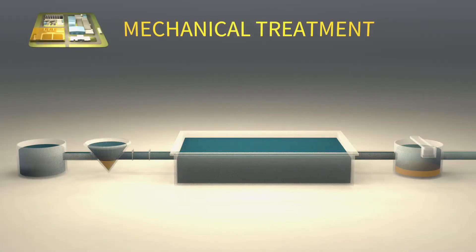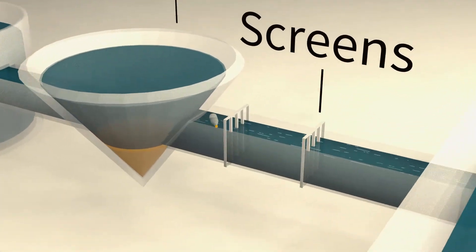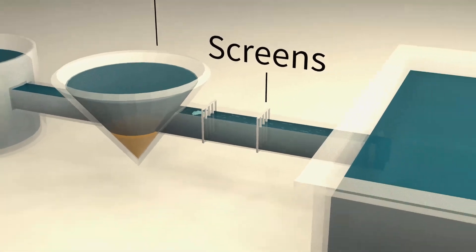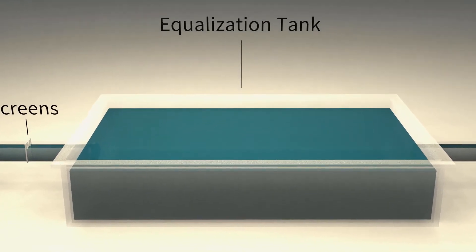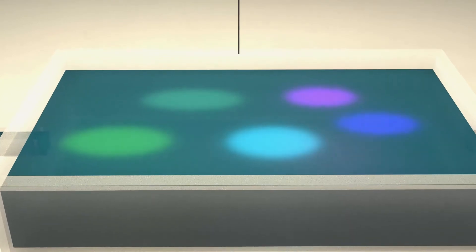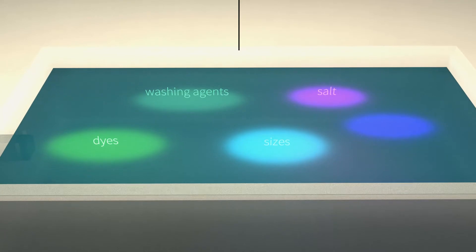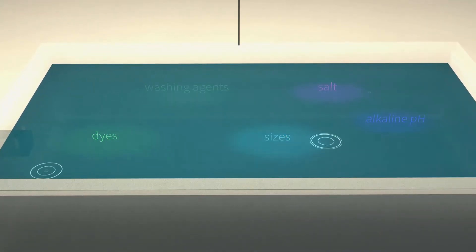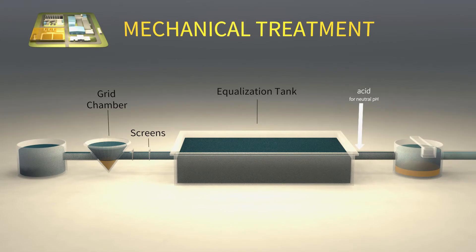In the mechanical treatment, debris and fibers are removed by a grid chamber and screens before the effluent is stored in a buffer and equalization tank. Since textile facilities use various processes in their production, the wastewater contains a mixture of chemicals, washing agents, sizes, dyes, salt, and alkaline pH. Dosing acids brings the pH to neutral, and coagulants help suspended solids settle in the primary clarifier.